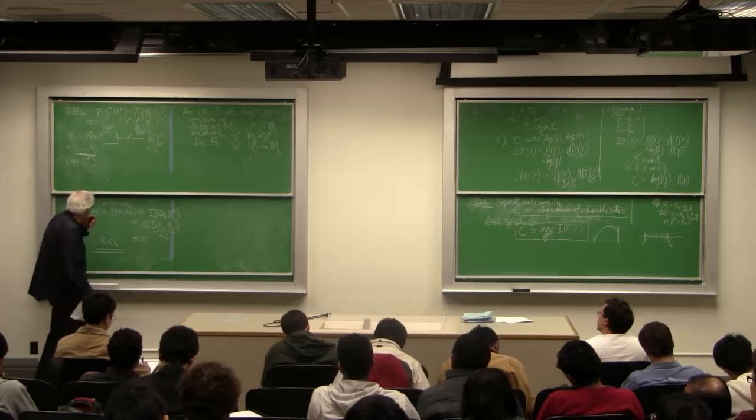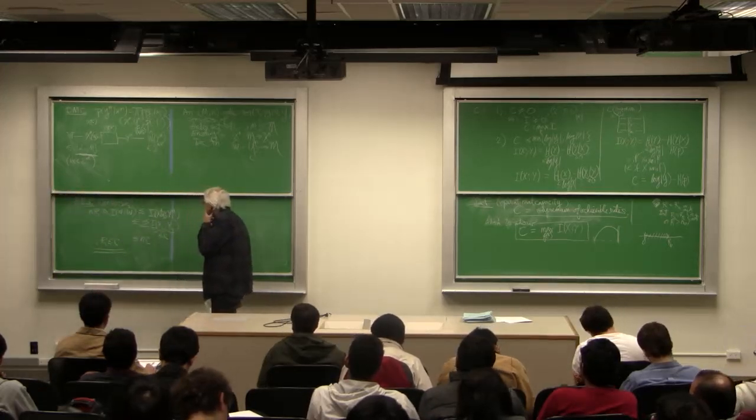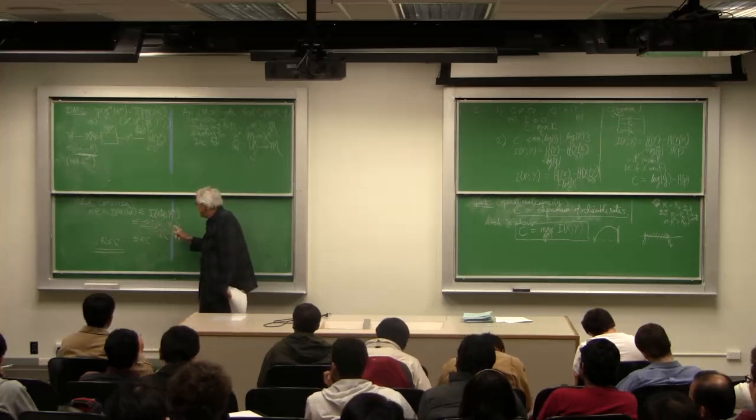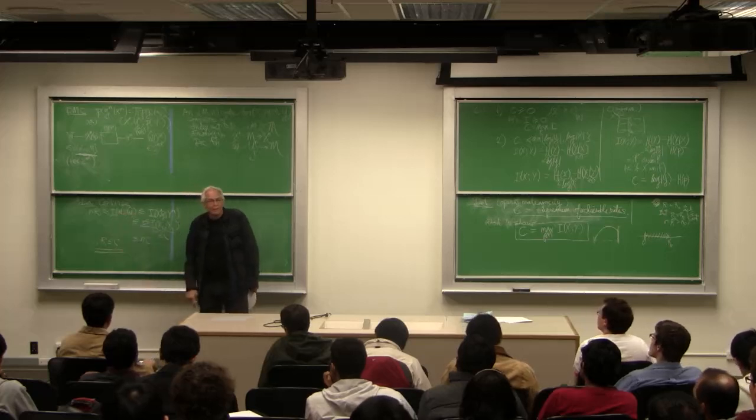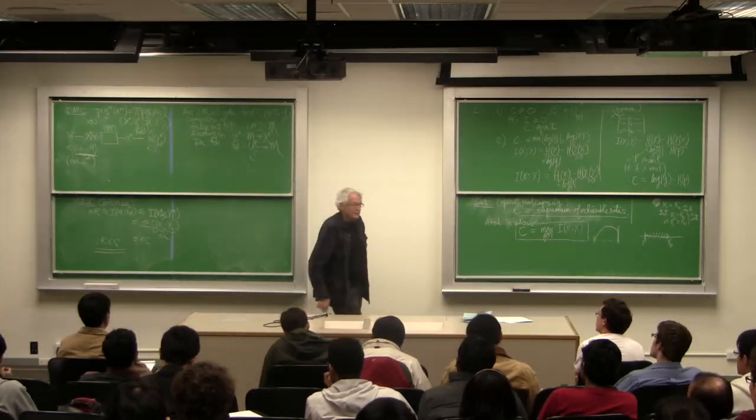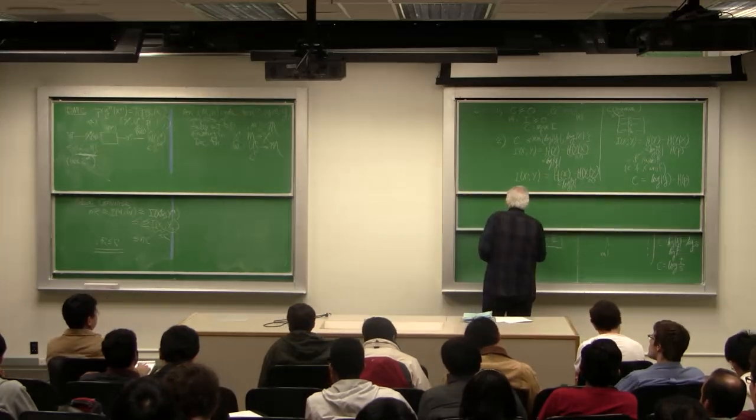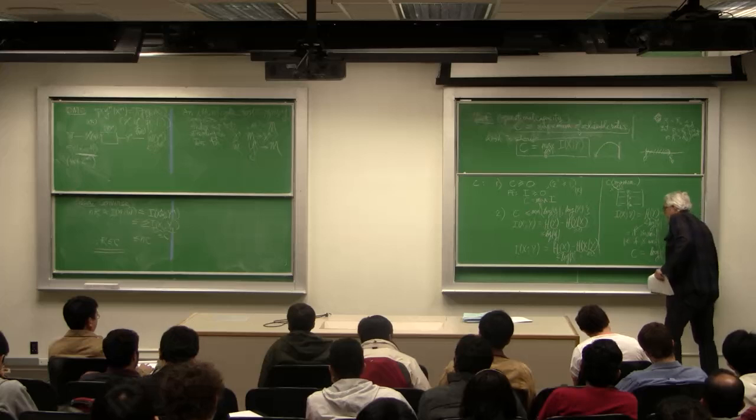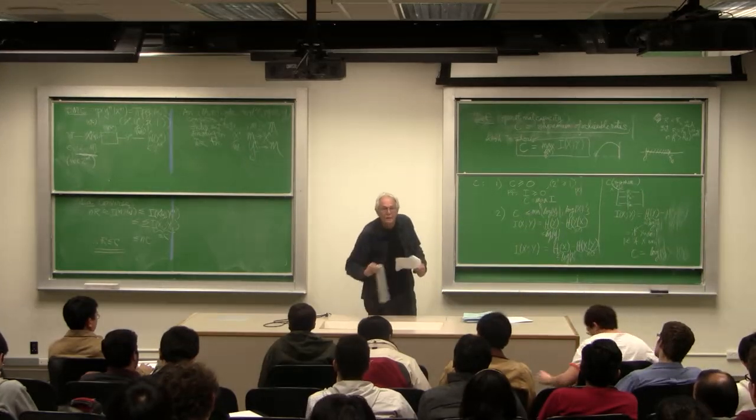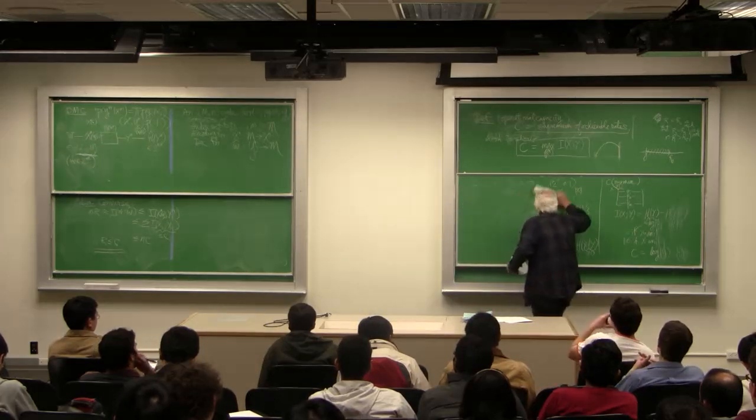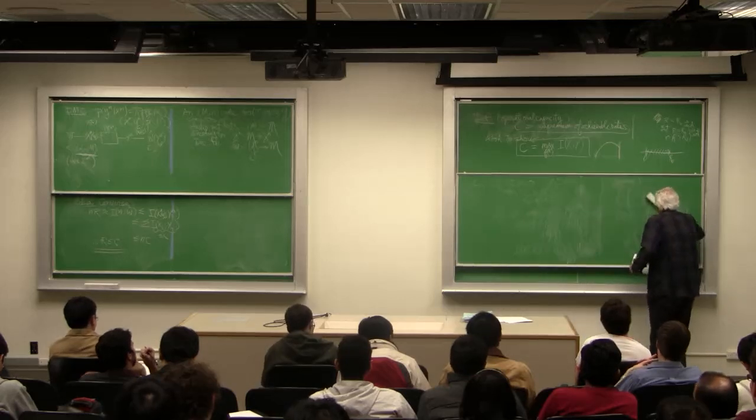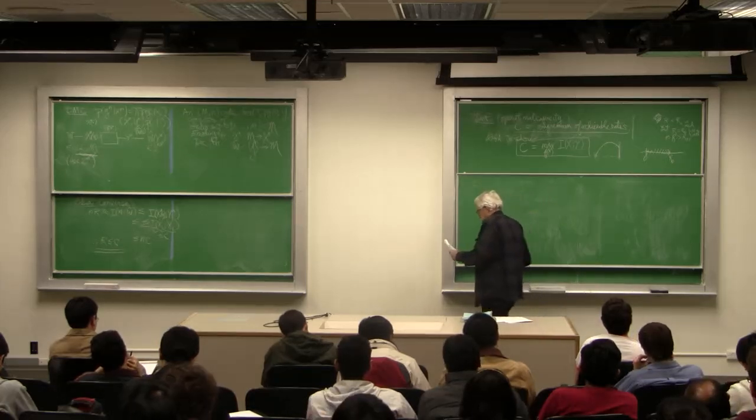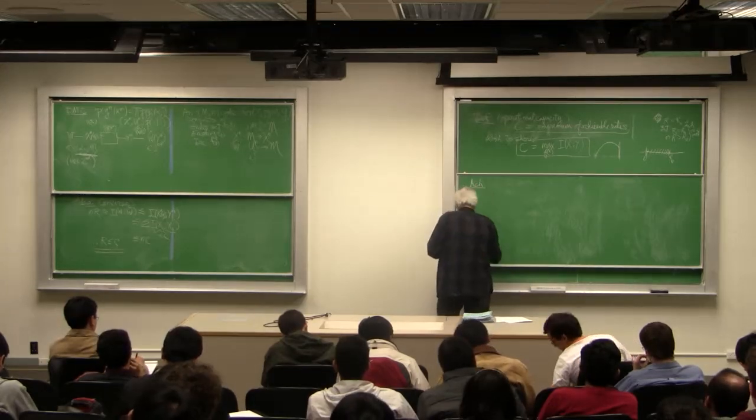So that's the proof. None of these statements is quite true. You need Fano inequality to throw away a negligible term here and there. But it's a good outline. Okay. Now what about the achievability? For the achievability, the outline would be this.